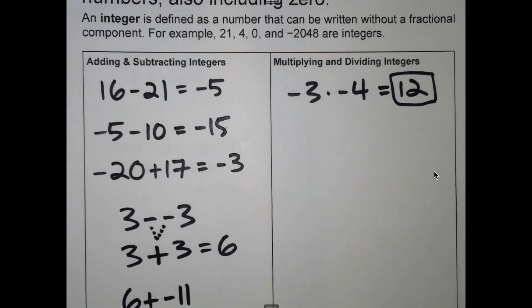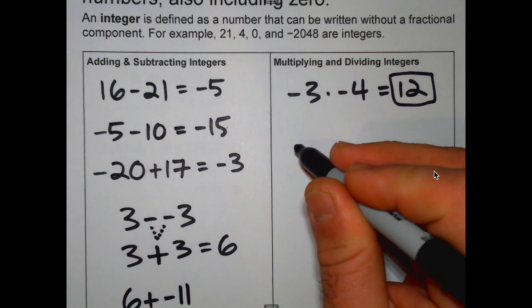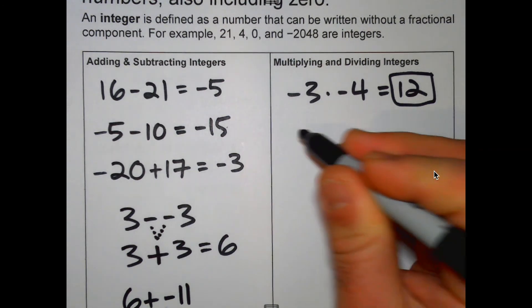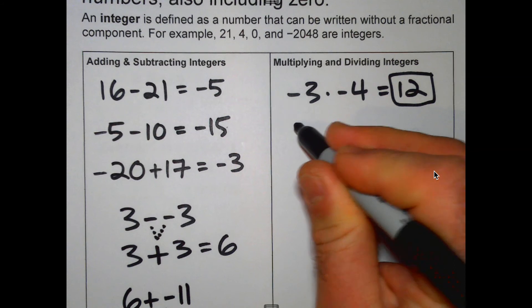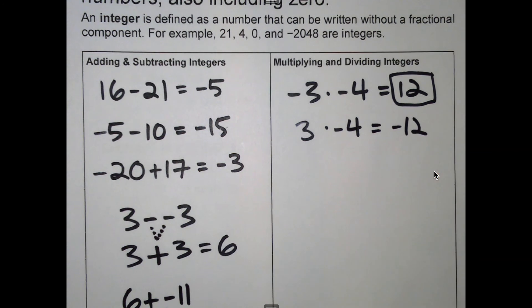So when you have multiplying and dividing, you have rules like it's true for multiplication and it's true for division. So if I had 1 negative, if I had 3 times negative 4, I'd have negative 12.